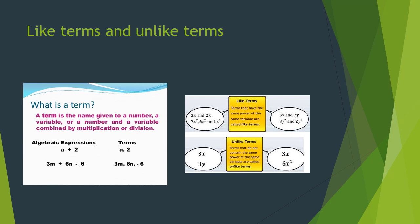Like terms and unlike terms: terms that have the same power of the same variable are called like terms. For example, 3x and 2x are like terms. Meanwhile, 3x and 3y are unlike terms because they have different variables.